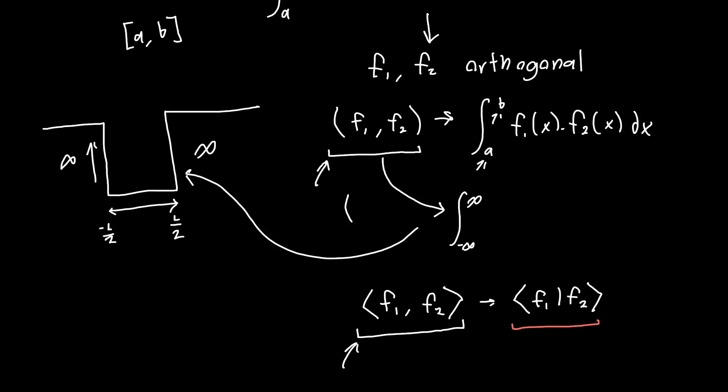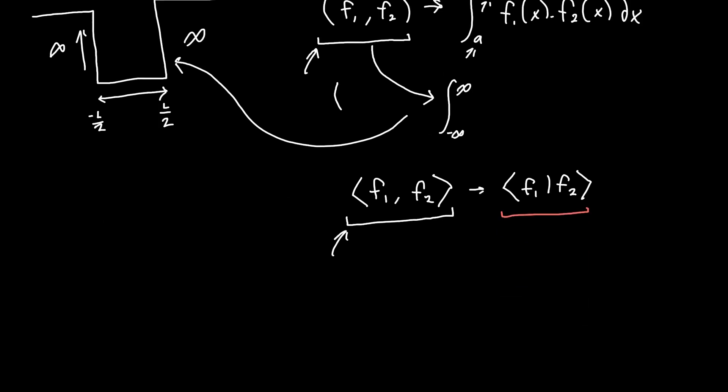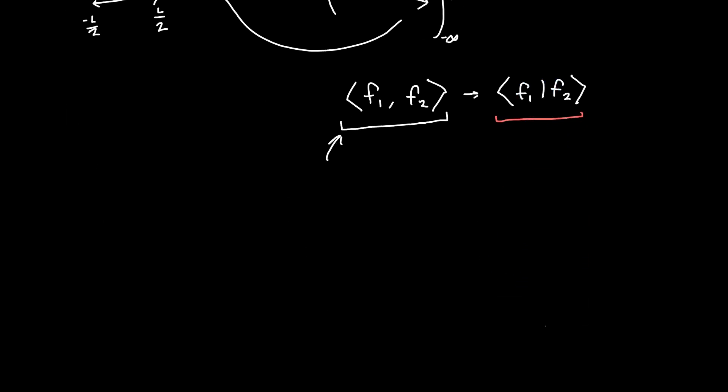In quantum mechanics a lot of the times these functions—I'm going to start writing them as ψ1 and ψ2 because we're dealing with primarily wave functions—when we want to take the inner product most of the time they're real, especially when we're dealing with energy eigenstates or wave functions that have some definite energy. But sometimes they're complex, and actually quite a bit of the time they can be complex.